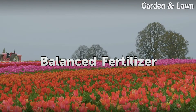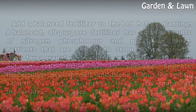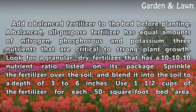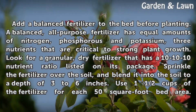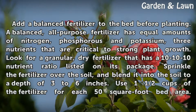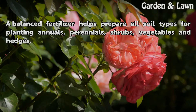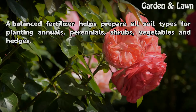Add a balanced fertilizer to the bed before planting. A balanced all-purpose fertilizer has equal amounts of nitrogen, phosphorus, and potassium — three nutrients critical to strong plant growth. Look for a granular dry fertilizer with a 10-10-10 nutrient ratio listed on its package. Sprinkle the fertilizer over the soil and blend it to a depth of 3 to 6 inches, using one and a half cups per 50 square foot bed area. A balanced fertilizer helps prepare all soil types for planting annuals, perennials, shrubs, vegetables, and hedges.